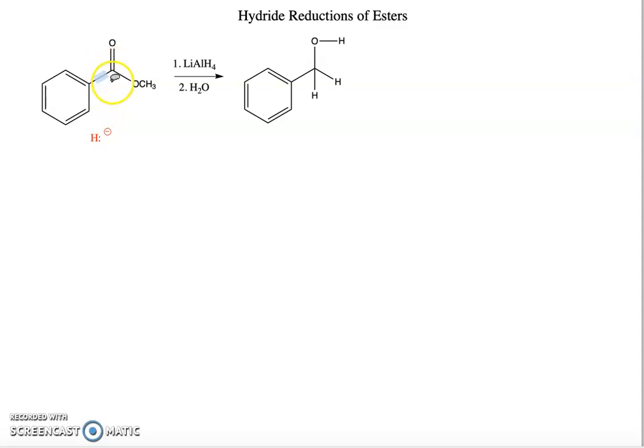If we look at a carbonyl, the carbonyl is polarized with a partially positive charge on the carbon and a partially negative charge on the oxygen because oxygen is more electronegative.